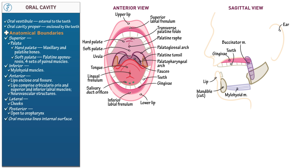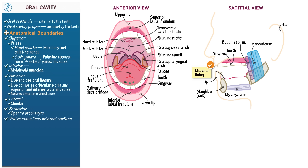We cut the buccinator away to show the inside of the oral cavity. Next, for context, show that the masseter arises from the zygomatic bone and inserts on the mandible, with its fibers running vertically. The masseter elevates the mandible and is involved in mastication — chewing. Show that the oral mucosal lining is continuous with the lips and lines the inner surfaces of the oral cavity, and that the muscular tongue fills the oral cavity and is connected to the mucous membrane inferiorly via the lingual frenulum.